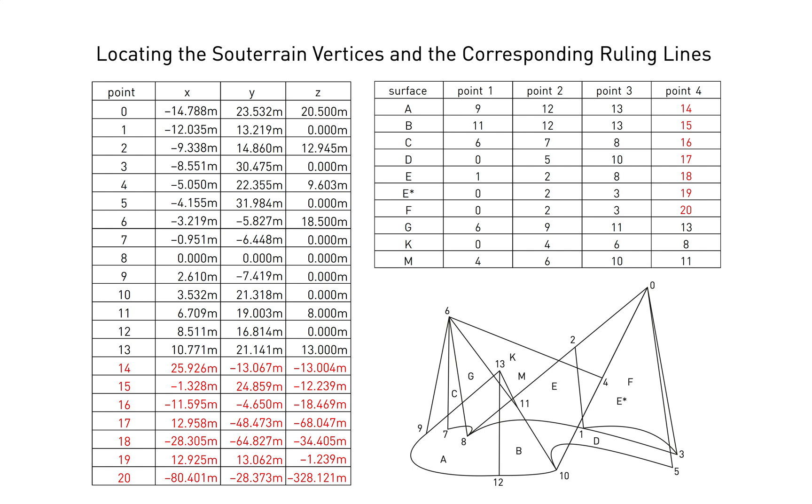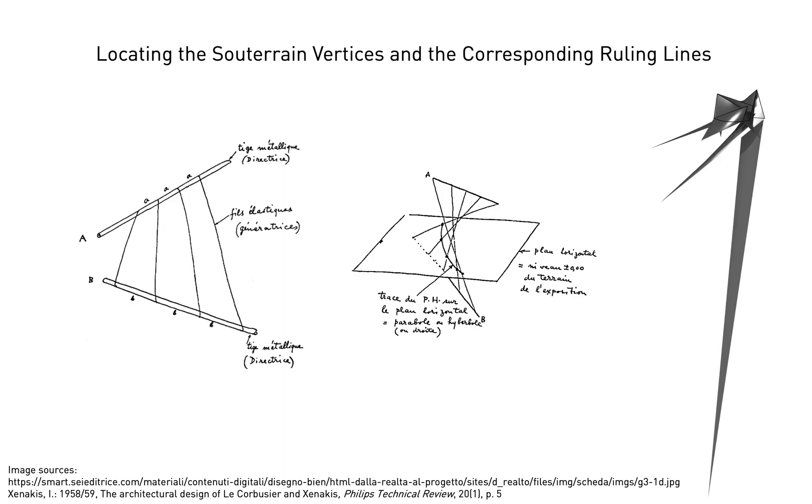Now we have the missing souterrain portions of surfaces A through F constructed. This step has led to some interesting observations. Xenakis writes that he used a special-made tool consisting of two metal spokes connected by several elastic strings to model the pavilion surfaces such that he could produce projection drawings of the surfaces including the curves in the ground plane. According to our analysis, assuming Xenakis was working at a likely model scale of 1 to 50, the tool would have had to extend across almost 7 meters in the case of surface F.